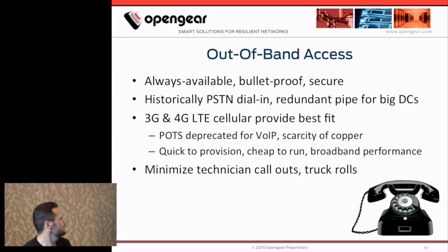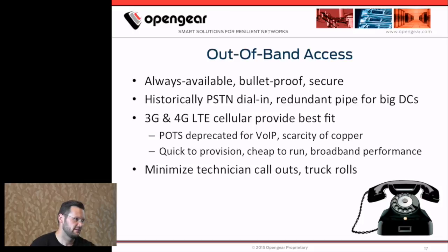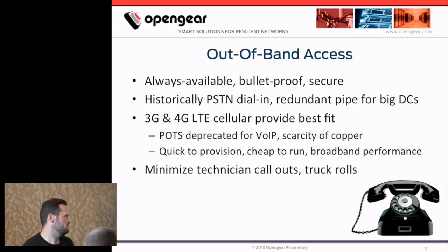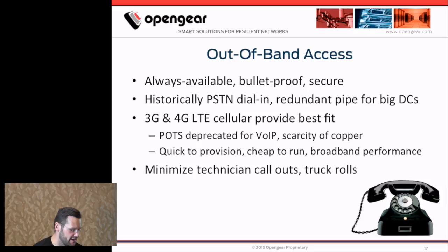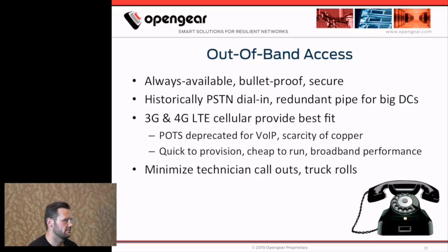So we need built-in remote access: a separate box with a separate data path, completely independent of your in-band network infrastructure. If you're talking about our reference remote plan, that would have been traditionally served by a PSTN dial-in line. But in the age of voice-over-IP, POTS is becoming increasingly scarce. AT&T is going to complete their IP transition by 2020 and no longer maintain their POTS network. What we're finding is cellular wireless has emerged as the best-fit technology to serve remote management.